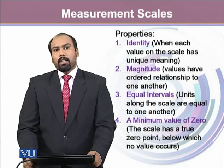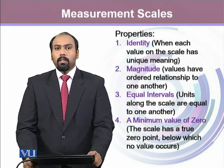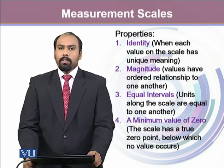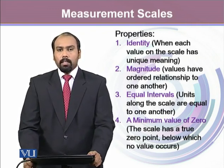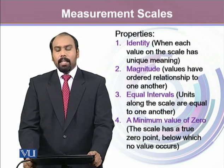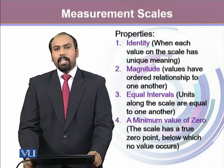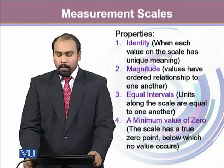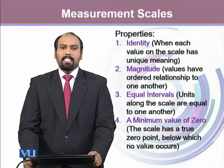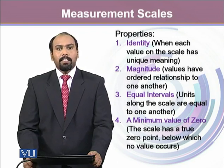All four scales should follow one or more of the four properties of measurement. The first property of measurement is identity — that each and every individual value is unique and it has a meaning behind it, and that meaning is a unique meaning.